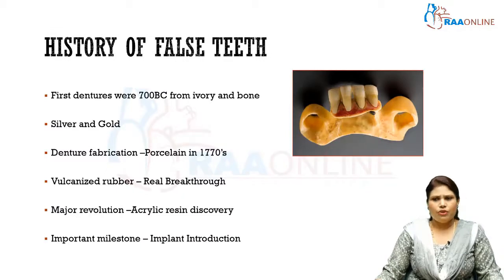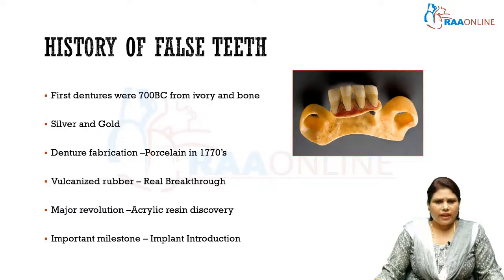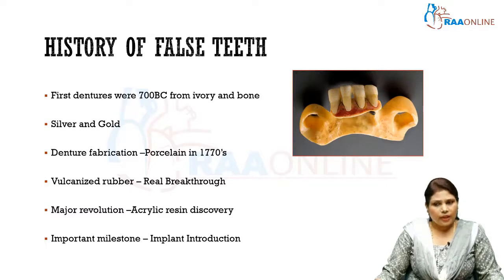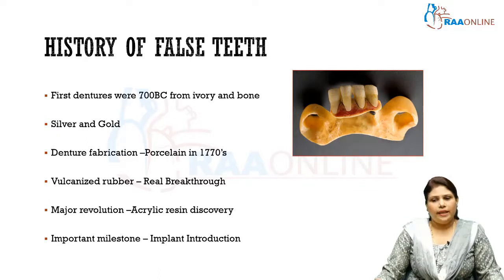Talking about the history of false teeth, the first dentures were found dating back to around 700 BC, made from ivory and bone. Later, silver and gold came into existence, and porcelain was found in the 1770s. The real breakthrough in dentistry happened when vulcanized rubber was used for the construction of dentures. The major revolution came when acrylic resins were discovered. The important milestone in dentistry happened with the introduction of implants.